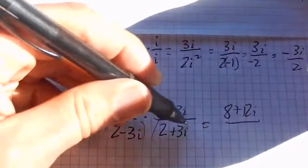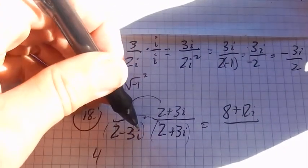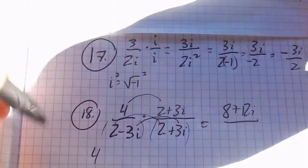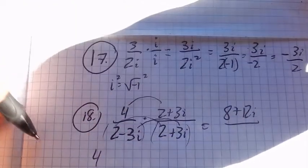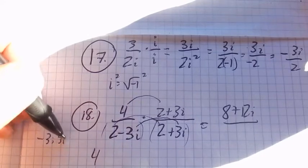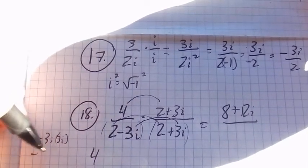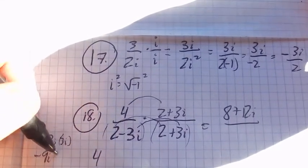In the denominator, 2 times 2 is 4. Negative 3i times negative 3i. I'm sorry, times positive 3i. So negative 3i times 3i is negative 9i squared.